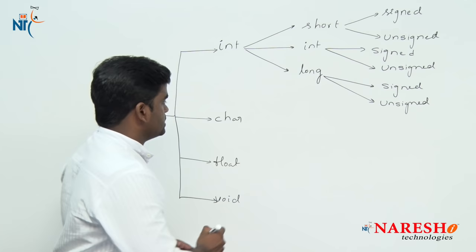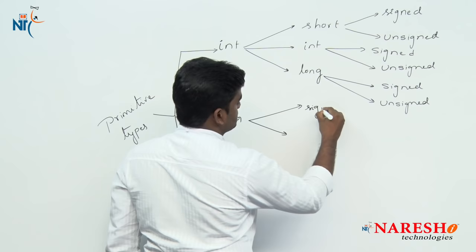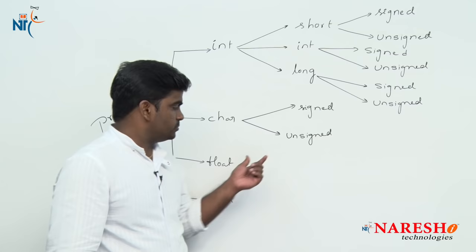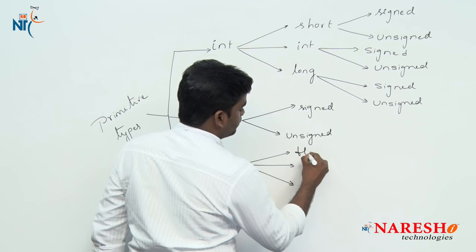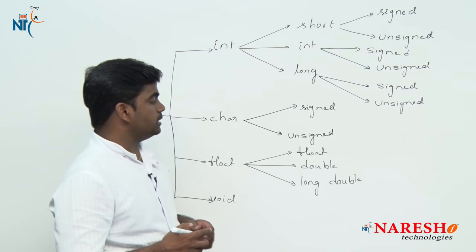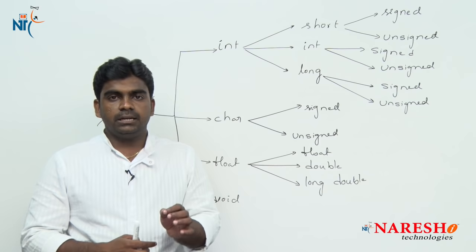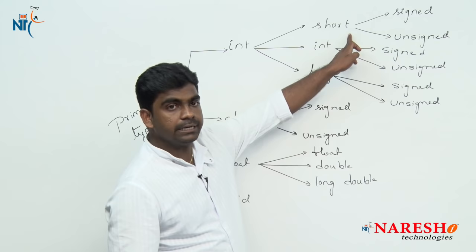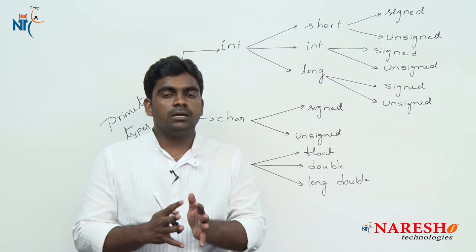Character is also divided into two types: signed character and unsigned character. Float is divided into three types: float, double, and long double. In total, these primitive types are subdivided into 11 types — this is the sub-classification of data types.